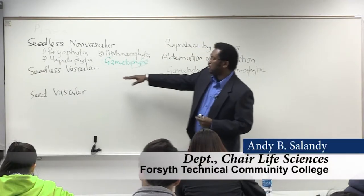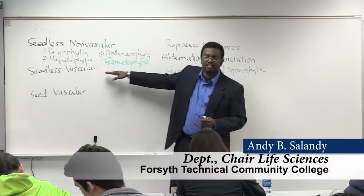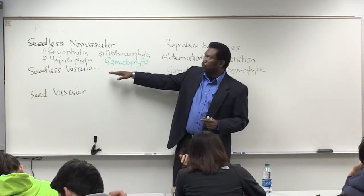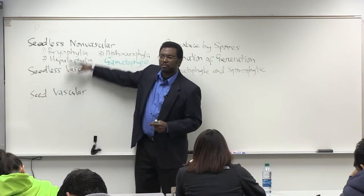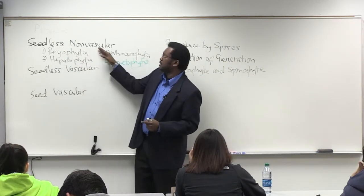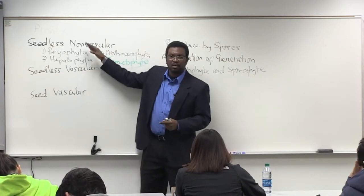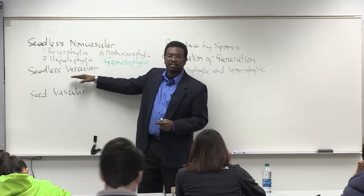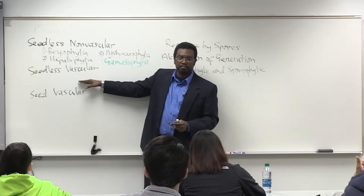As we transition to the next group, seedless vascular, what really is the difference between the first two — between the seedless nonvascular and seedless vascular? What's the key evolutionary characteristic that's developed in this group?